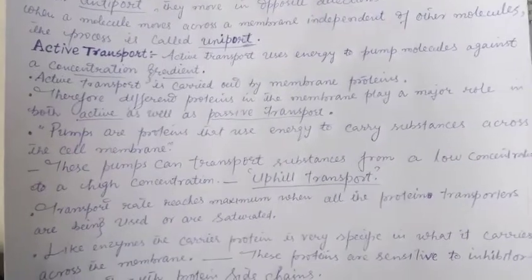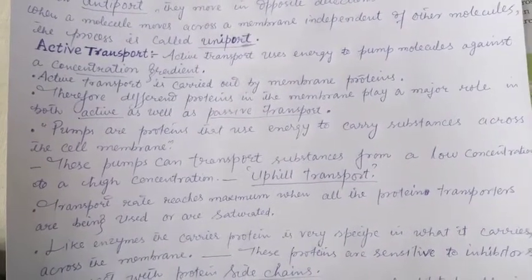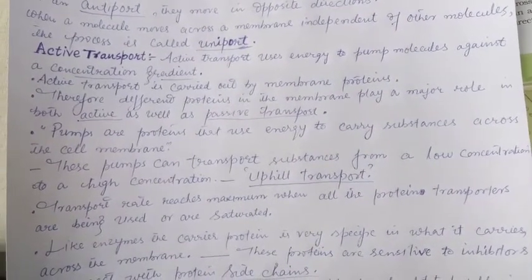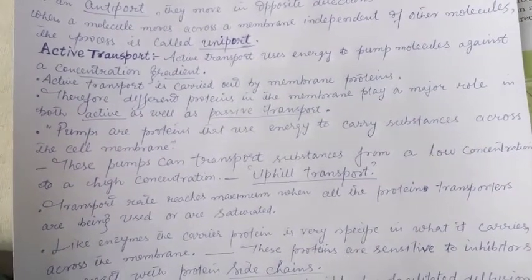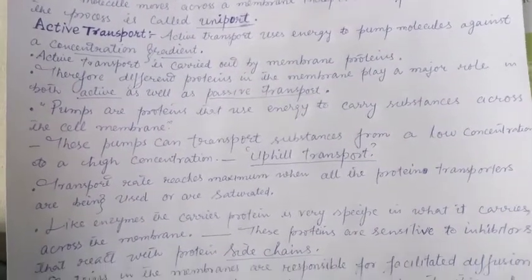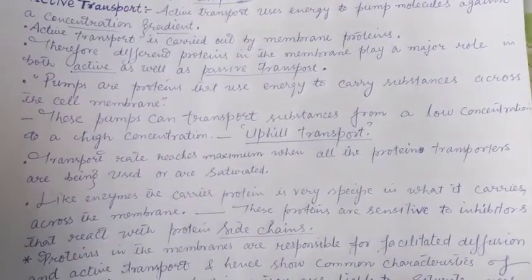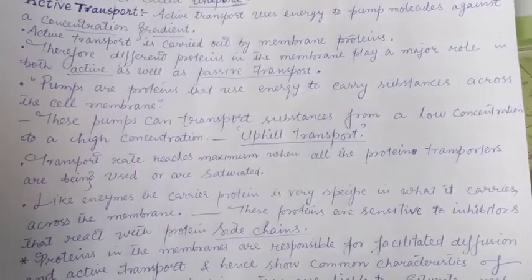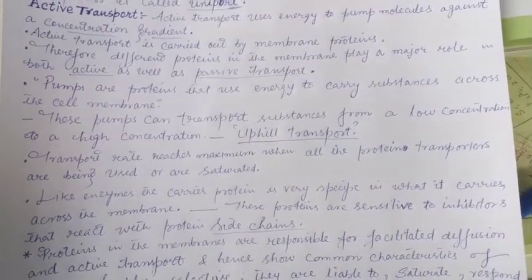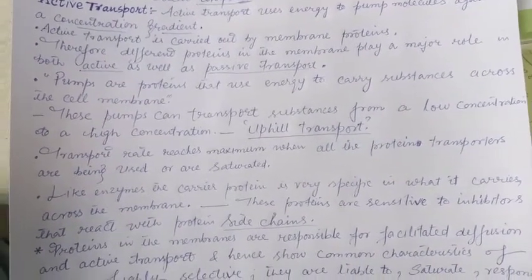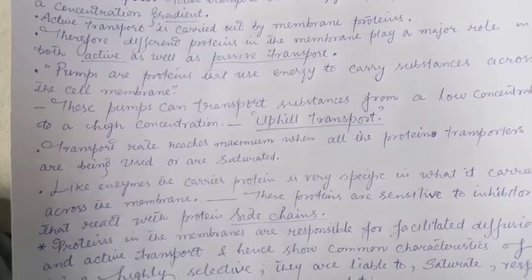Transport rate reaches a maximum when all protein transporters are being used or are saturated. Like enzymes, carrier proteins are very specific in what they carry across the membrane, and these proteins are sensitive to inhibitors that react with the protein side chains.